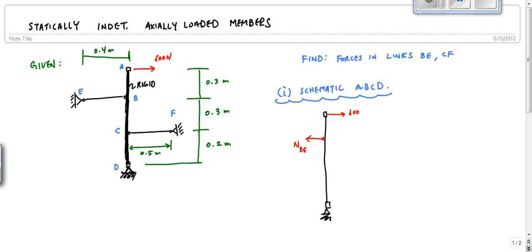And here's my 600 newtons. And then if I'm going to assume member CF is in tension, I'm going to draw it like this right here, NCF. Everyone okay with that? And I also have reactions here, DY and DX. But these provide no help to me.